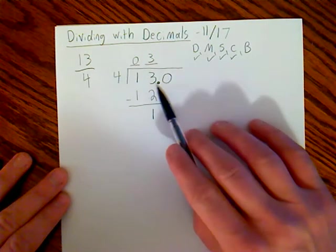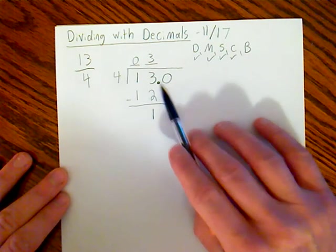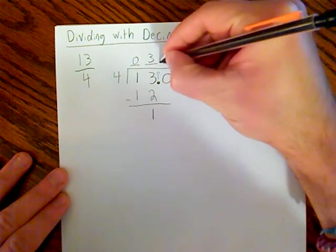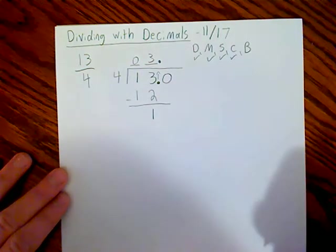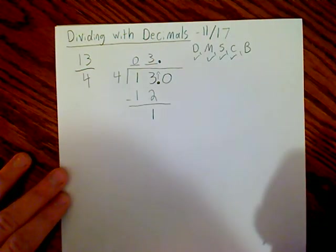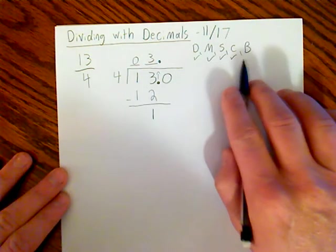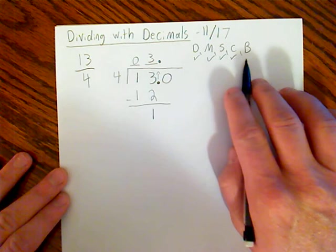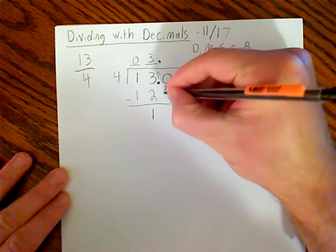What I've done is I've added the decimal and the zero. Once I added that decimal point, I'm going to pop that up into my answer as well. So I've added a zero, and now I can bring that zero down. I've basically added a number that I can use to help me divide.